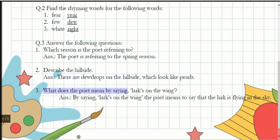Next question: what does the poet mean by saying 'larks on the wing'? I had already told you it means lark is on the wing. The answer will be: by saying 'larks on the wing,' the poet means to say that the lark is flying in the sky.